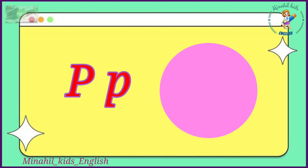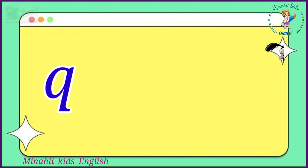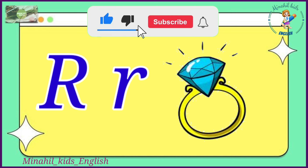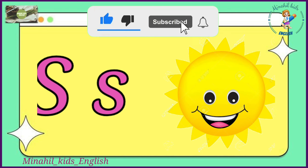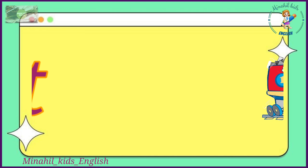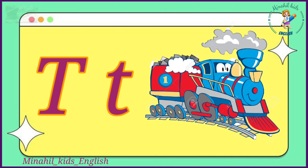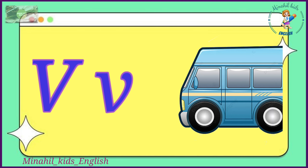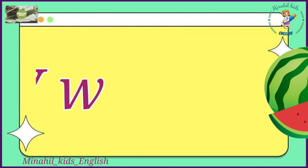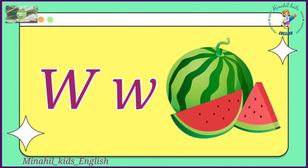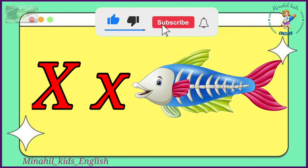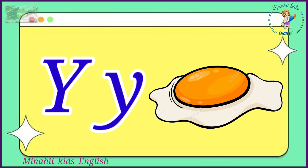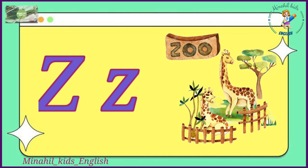P for Thing, Q for Quail, R for Ring, S for Sun, T for Train, U for Umbrella, V for Van, W for Watermelon, X for Extra Fish, Y for Yook and Z for Zoo.